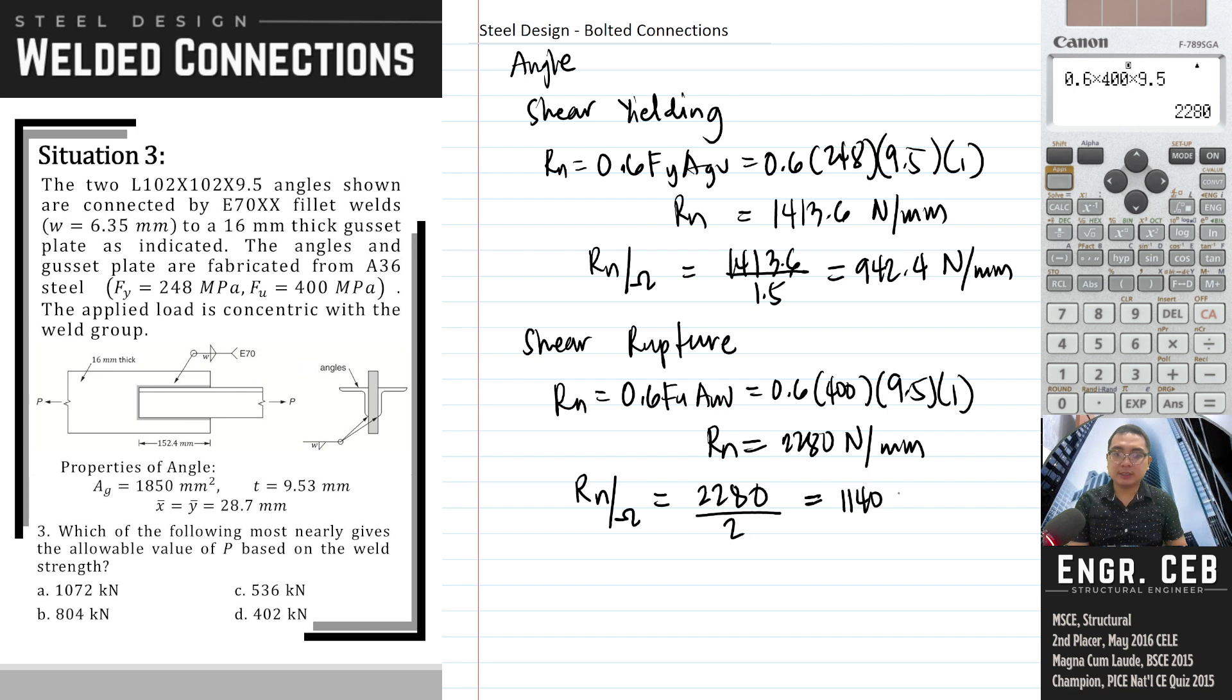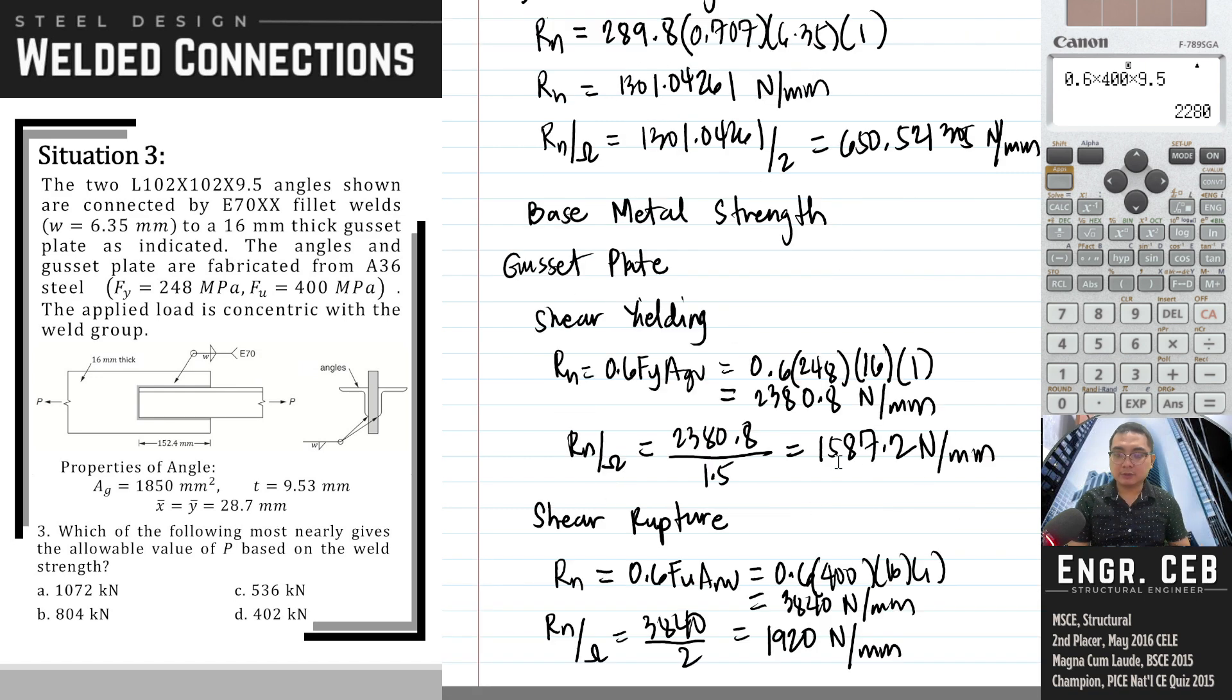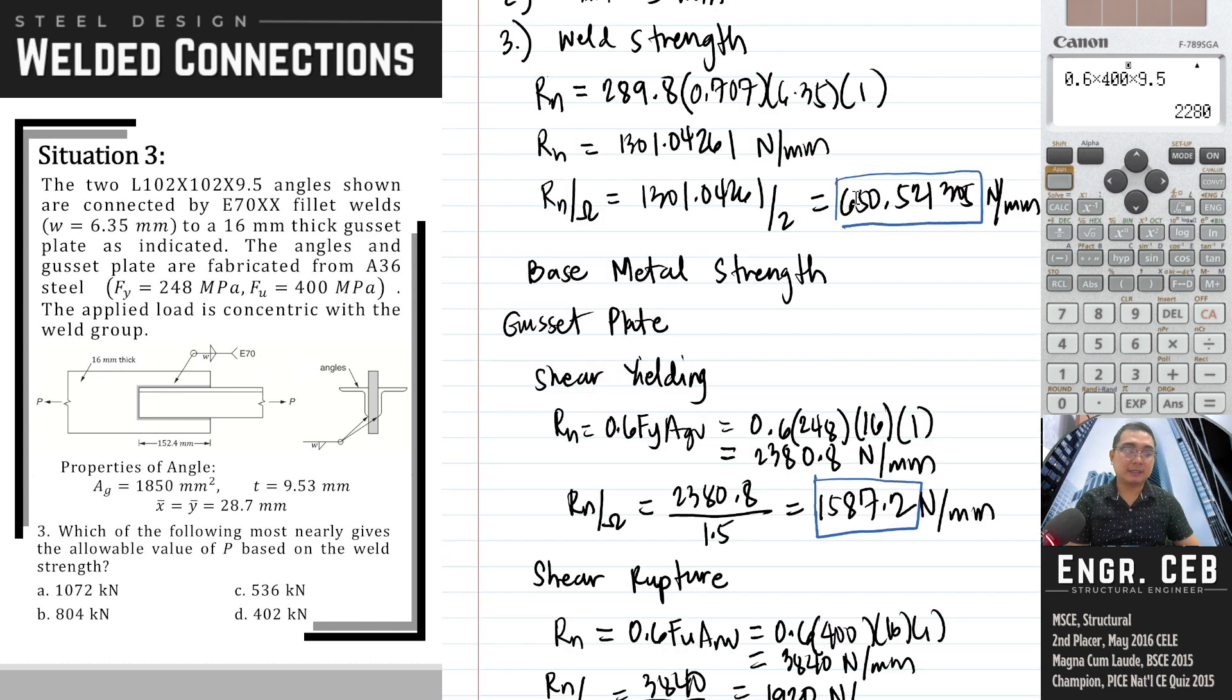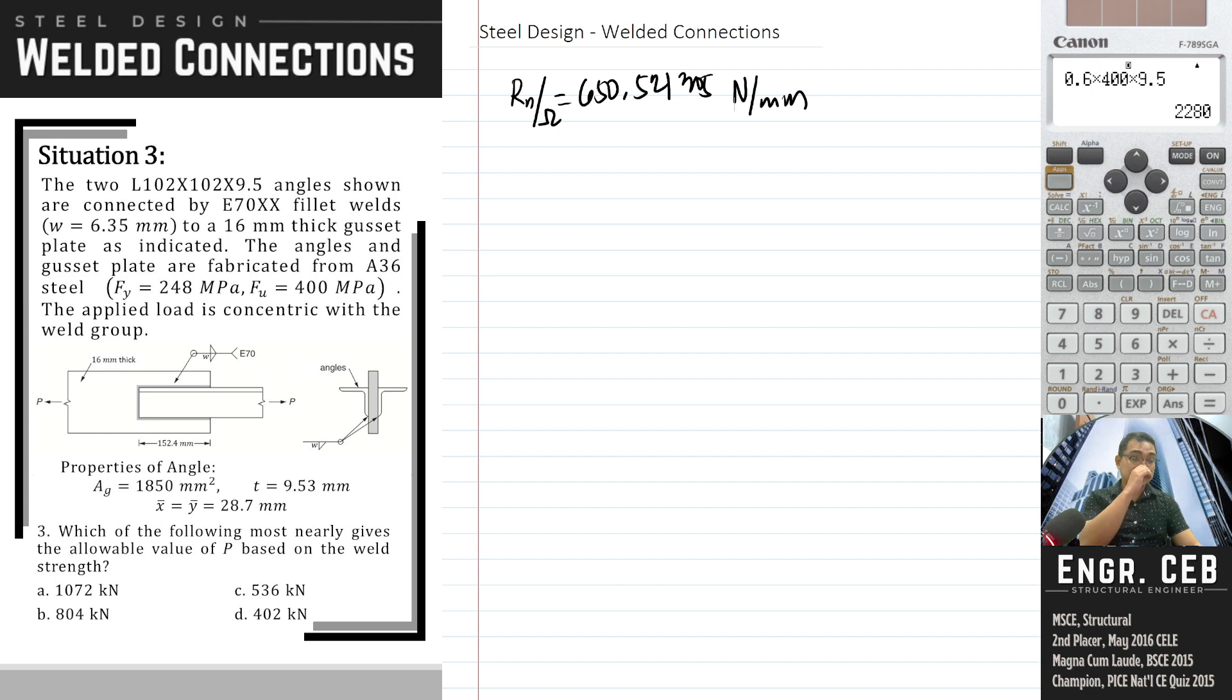Let us compare all the limit states. 942 versus 1587, so this will govern. Then versus weld strength, compare the three: 650 versus 1587 versus 942. The lowest is 650, so we can now compute for the allowable value of P based on the weld strength. This is strength per unit of leg.